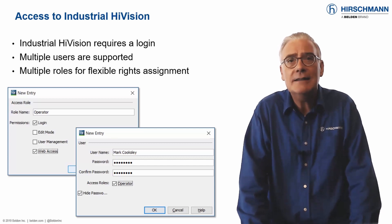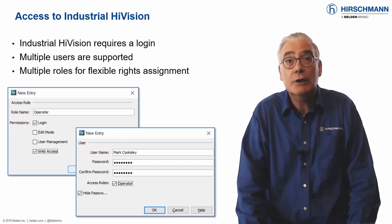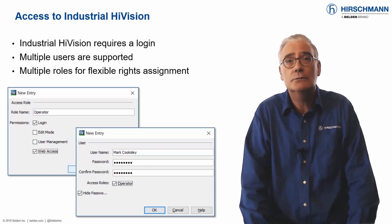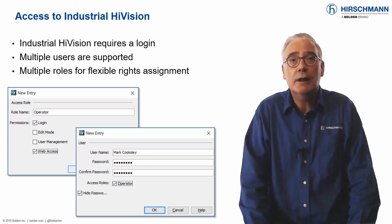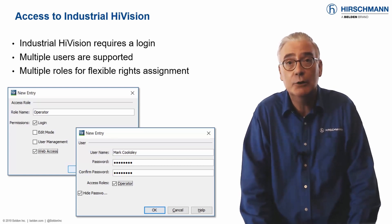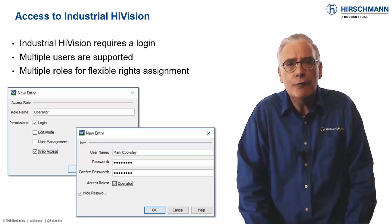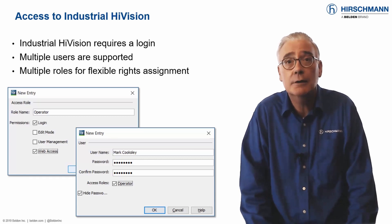At the most basic level, Industrial HiVision can operate without user accounts. The next security level involves password protecting edit mode. A password would then be required to make modifications to the application. For closed systems, this may be enough.